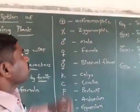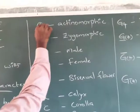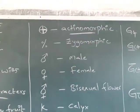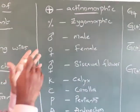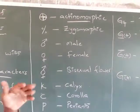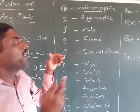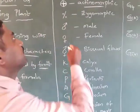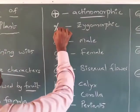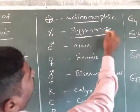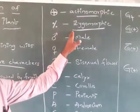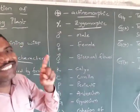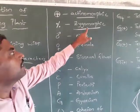A circle with a plus symbol indicates actinomorphic — a flower which can be divided into two equal halves by any plane is called an actinomorphic flower. A percentage symbol indicates zygomorphic — a flower which can be divided into two equal halves by only a single plane is called a zygomorphic flower.